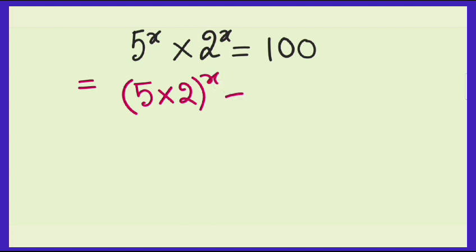5 into 2 and then you write the power, and 100 that is 10 to the power 2. So we will now simplify this one. How? 5 into 2 is 10, so 10 to the power x equals 10 to the power 2.